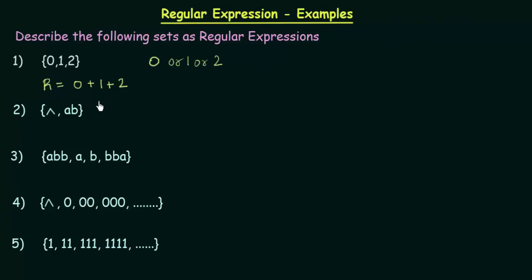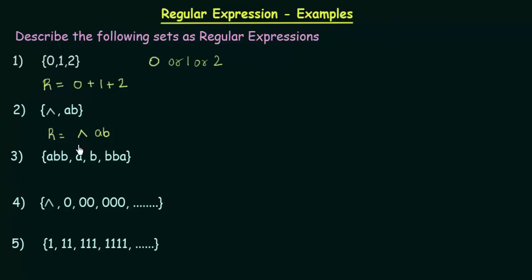It was simple. Let's come to the second one. Here we see the empty symbol and AB — these are the only symbols present in this set. This will be denoted as R = ε AB. We see that when the empty symbol is not included and we had more than one element, we used the plus symbol. But here, when you only have one symbol and the empty symbol along with it, you don't have to use the plus or 'or' symbol — you can just write ε and AB.